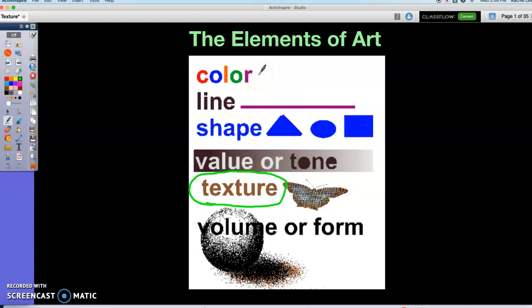Color, we know paintings have color. We know about primary and secondary colors. Lines, any kind of drawing you make, you use lines.